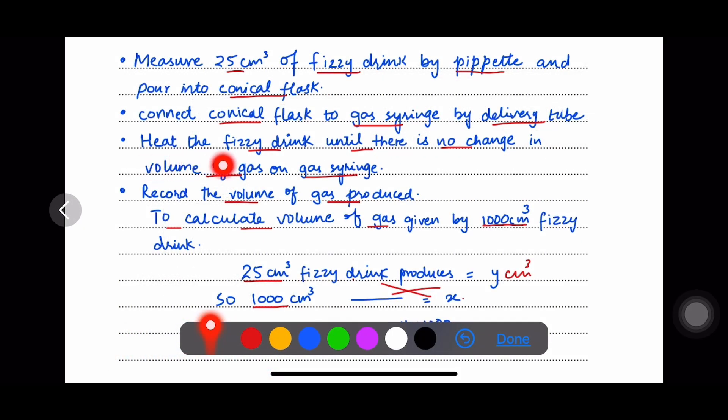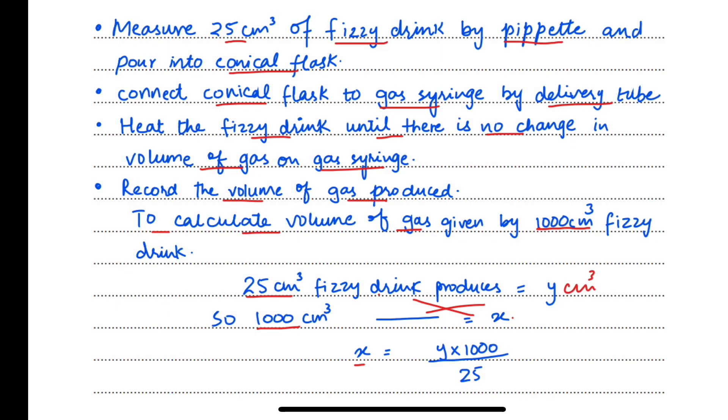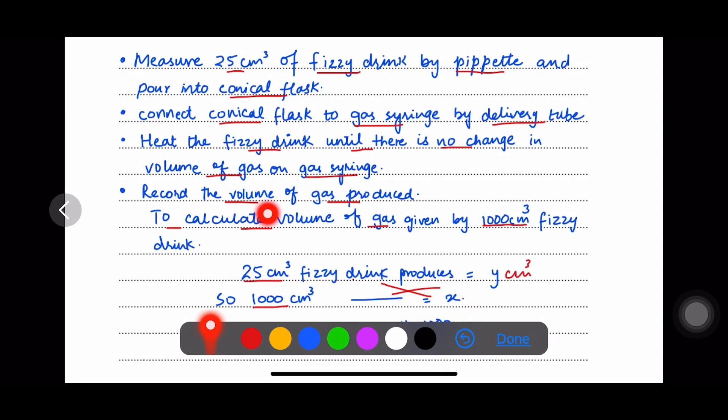Heat the fizzy drink until there is no change in volume of gas on gas syringe. It means heating to constant volume of the gas. Record the volume of the gas produced from given sample.